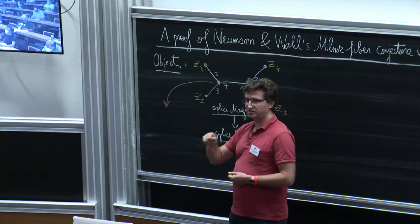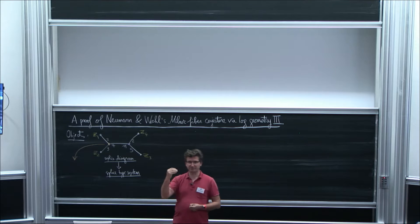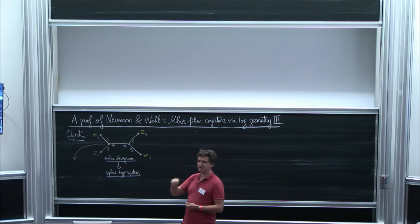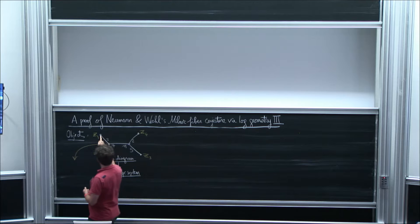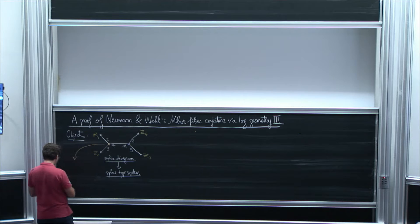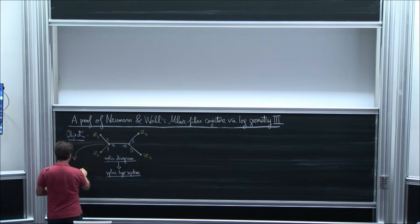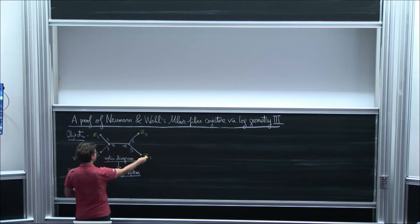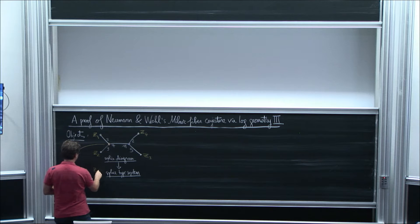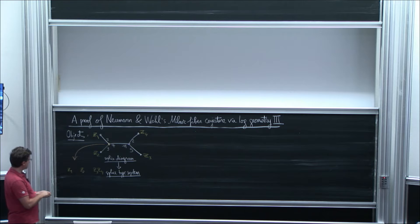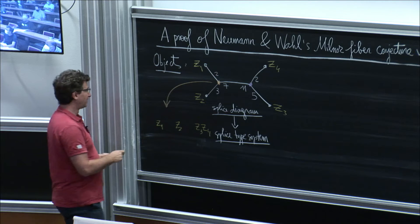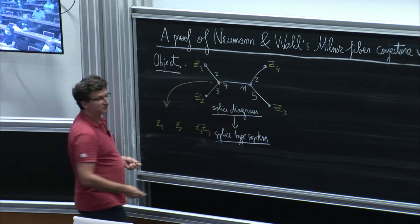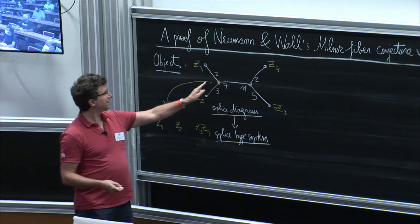The monomial corresponding to each edge involves only the variables which are seen in that direction. So here we have a monomial only in Z1, here a monomial in Z2, and here a monomial in Z3, Z4. Now the problem is to put exponents. When we go directly to leaves, the exponents are easy — they are the edge weights.